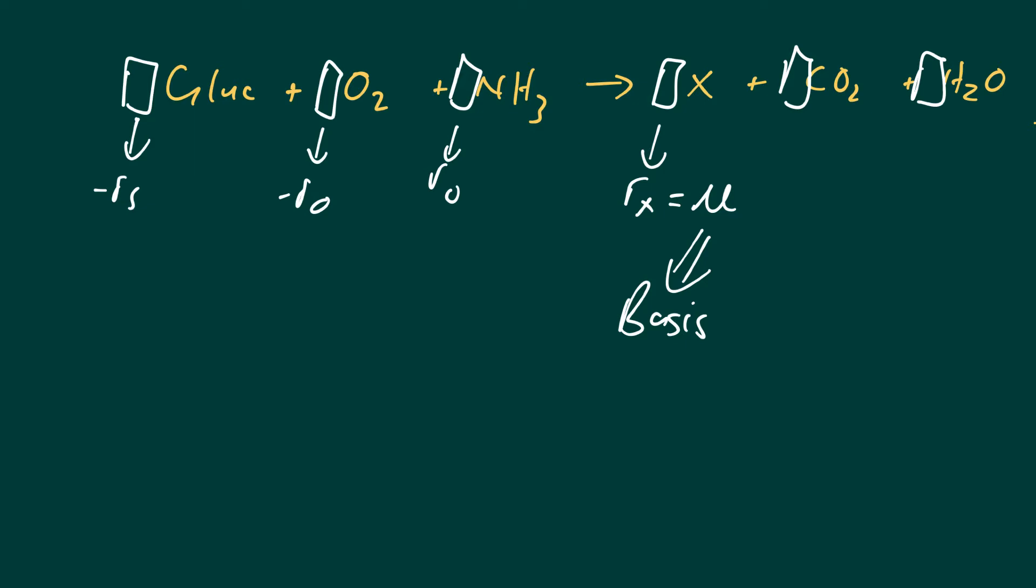So to simplify this expression where we have six components, we can say we're not going to do a separate hydrogen and oxygen balance. So we're going to do a degree of reduction balance and if we do a degree of reduction balance, we can get rid of water. So that's one component that we can get rid of. And then also we can skip the nitrogen balance because the degree of reduction of ammonia is zero. We can now skip this and just say we know what the degree of reduction of biomass is, the degree of reduction of biomass for the standard formula is 4.2.